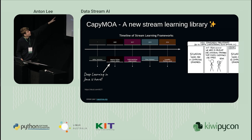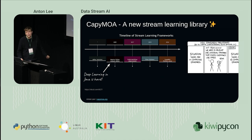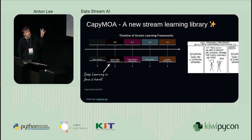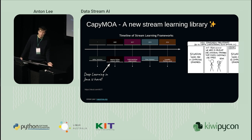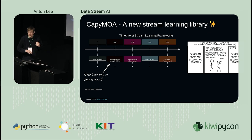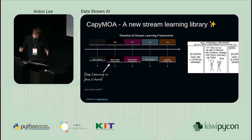Early on, we have this massive online analysis platform - MOA - which some of the people that have worked with me on Capimoa also worked on. But it's in Java, and Java doesn't benefit from the explosion in the machine learning ecosystem. We have tools like scikit-learn, PyTorch, and plenty of tools for hyperparameter optimization and all of these machine learning problems.